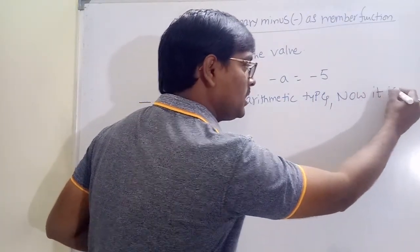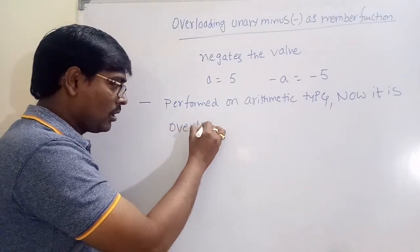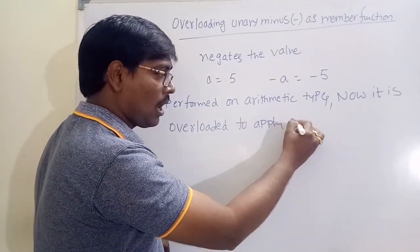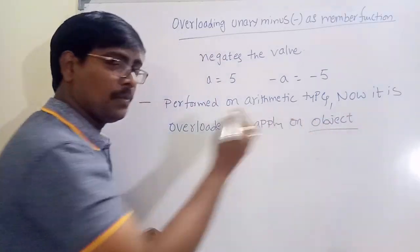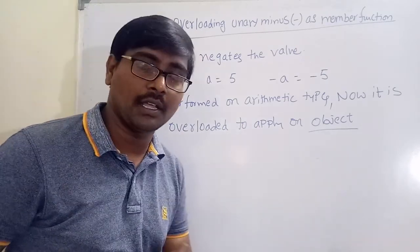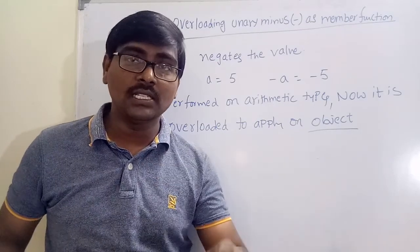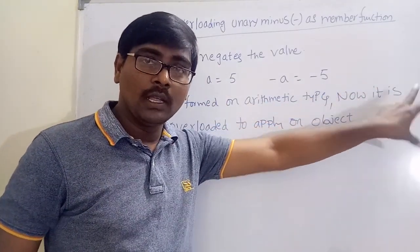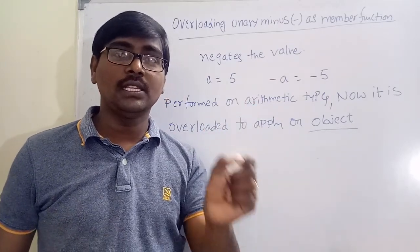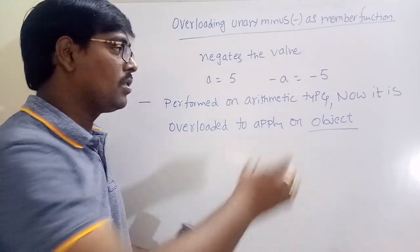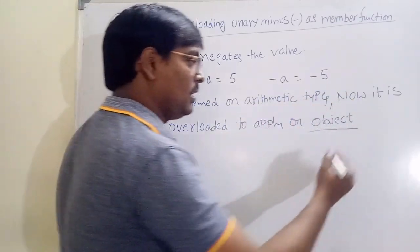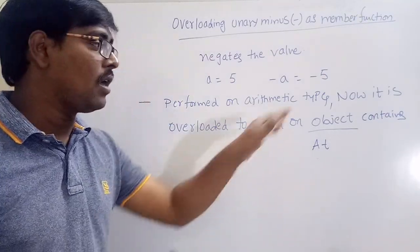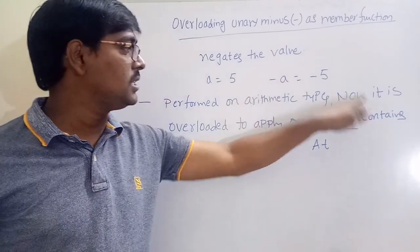Now it is overloaded — overloaded to apply on an object. This is important. That means overloading on a user-defined data type. A class is a user-defined data type, and an object is an instance of that class. So up to now we are performing operations on arithmetic types. Now, overloading means the same unary minus is applied to an object. The object itself contains arithmetic types, and this is what overloading means.